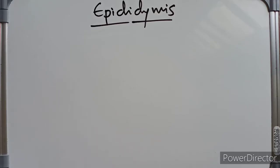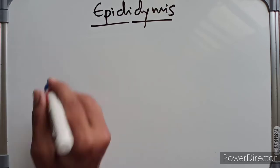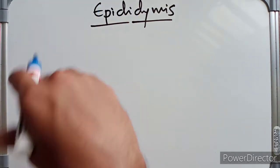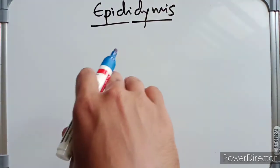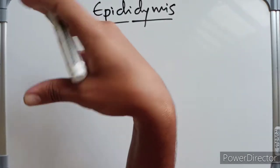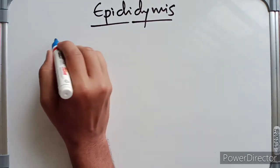Hello guys, welcome to METN. In this video we are going to look at the anatomy of the epididymis. The epididymis is a comma-shaped structure which lies on the superior and posterior lateral surface of the testis.